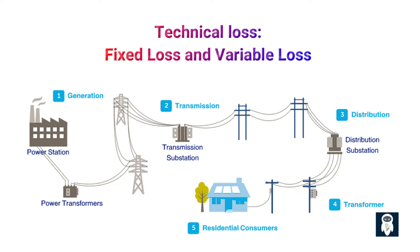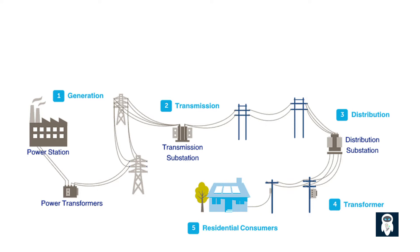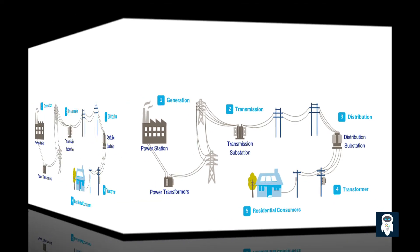Variable loss is the loss of energy that depends on the current or the load and is proportional to the square of the current. Variable loss occurs mainly in conductors, cables, and switchgear.